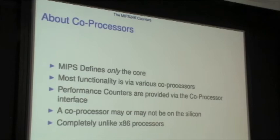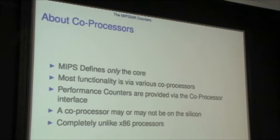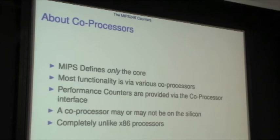This is completely unlike an x86 processor where you don't have to think about going through a special coprocessor interface to access a special function. There's a set of registers called the coprocessor registers, and you read an index off the coprocessor register to get to your special function. Performance counters are always off of index 25 on MIPS.